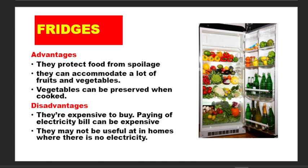Let's look at the fridge — this is the modern one that we use mostly, especially among urban people. The fridge protects food from spoilage and can accommodate a lot of fruit, vegetables, or food, either cooked or uncooked. The disadvantages are that it is expensive to buy, paying for electricity can be expensive, and it may not be useful in homes where there is no electricity. So many people cannot afford to buy a fridge.